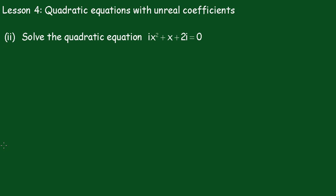Here's another one with complex coefficients. Setting it up again, we have a is equal to i, b is equal to 1, and c equals 2i.